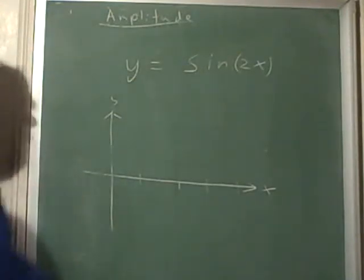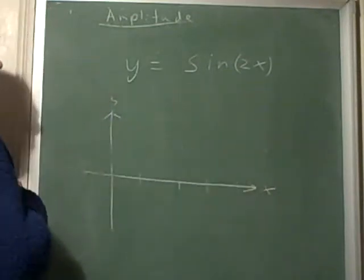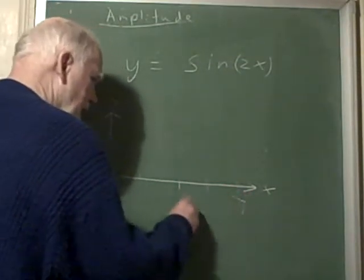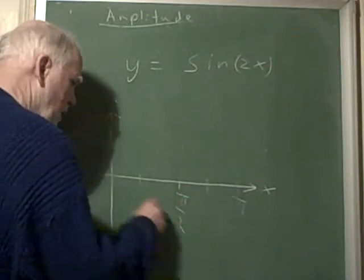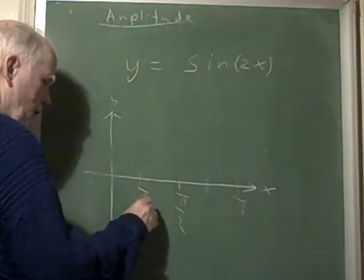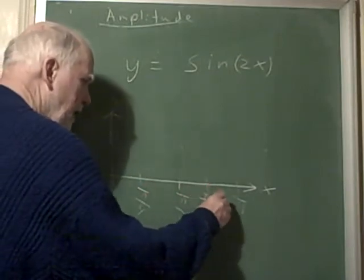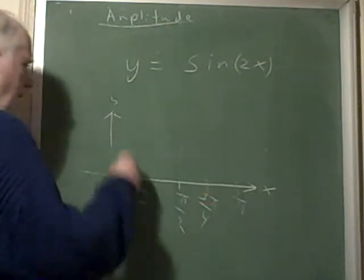This makes the period shorter, in fact it makes it half as long. So now our normal 2 pi period is now pi units. This would be pi over 2, this would be pi over 4, and this would be 3 pi over 4.